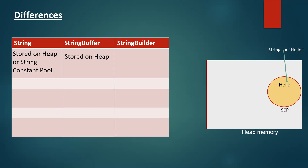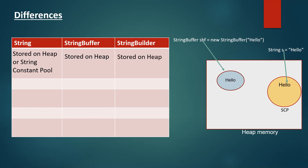A StringBuffer object is stored on the heap. The syntax is: StringBuffer sb = new StringBuffer("content"), and it is stored on the heap memory. Same is the case for StringBuilder as well — it is stored on the heap.